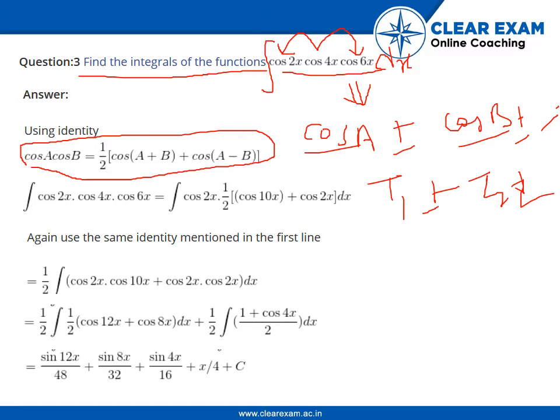Now apply the same identity in this question. First of all we take these two terms: cos 4x is our A and 6x is our B. So cos(A + B) will be equal to 6x plus 4x, that will be equal to 10x. And cos(A - B), A is 4x and B is 6x, so we get cos of minus 2x. But cos of minus 2x is actually equal to cos 2x, so we write cos 2x here.